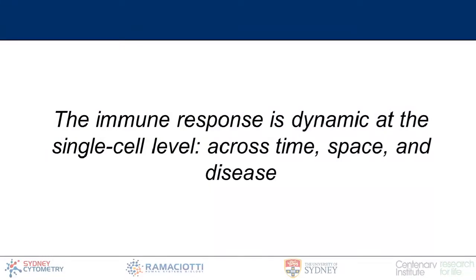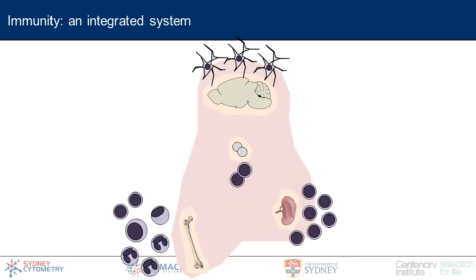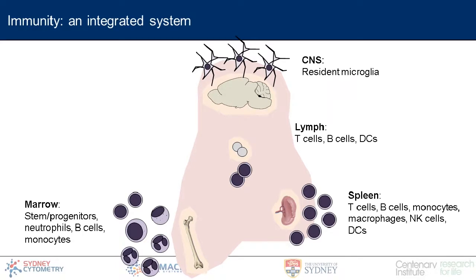The key concept I want to discuss today is that the immune response is a dynamic process — dynamic at the single cell level across time, across space and tissues, and across diseases. The immune system can be thought of as a network of interconnected tissues, each containing different cell types. Some immune cells exist broadly in blood, lymph tissue, and bone marrow, while highly specialized resident cells like microglia exist only in the brain and have very specialized functions particular to the nervous system.